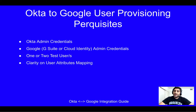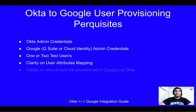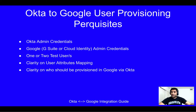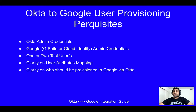You should also have some clarity on user attribute mapping — which attributes do you want to push from Okta to Google. You should also have clarity on which users you'd be provisioning from Okta to Google: whether it will be based on an organizational unit in your AD, maybe based on a user attribute such as if user.department equals IT then push it, or maybe based on a group you might have created in AD.